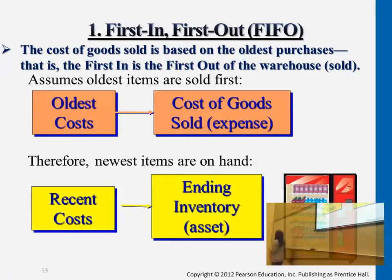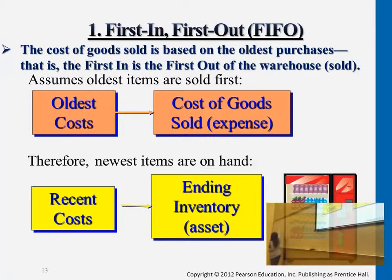We assign the cost when we start to sell to customers. For the first 1,000 bottles, we use 50 cents; if a customer buys more after those are gone, we assign the 51-cent cost. This is first-in, first-out.